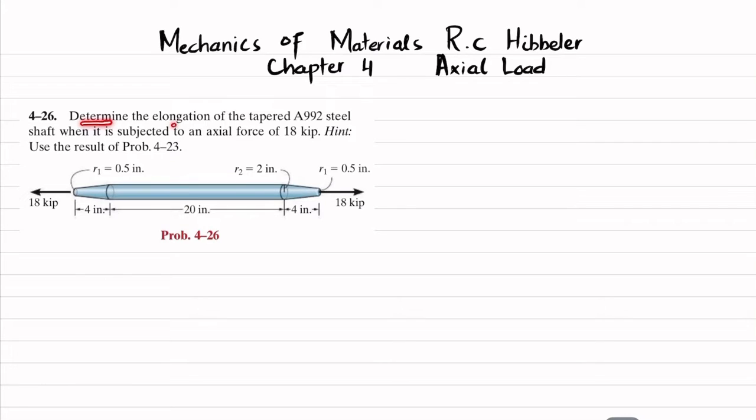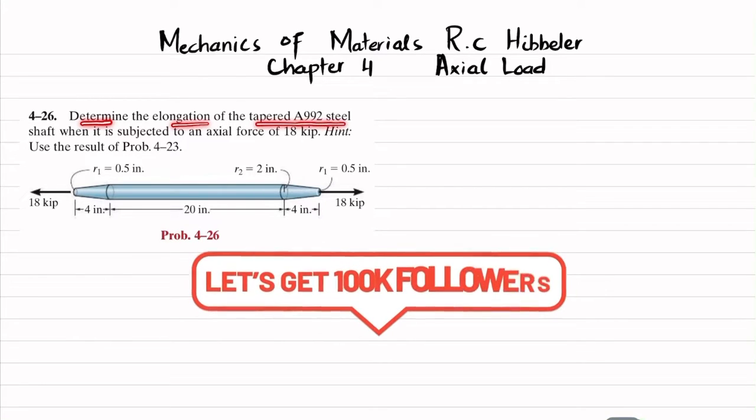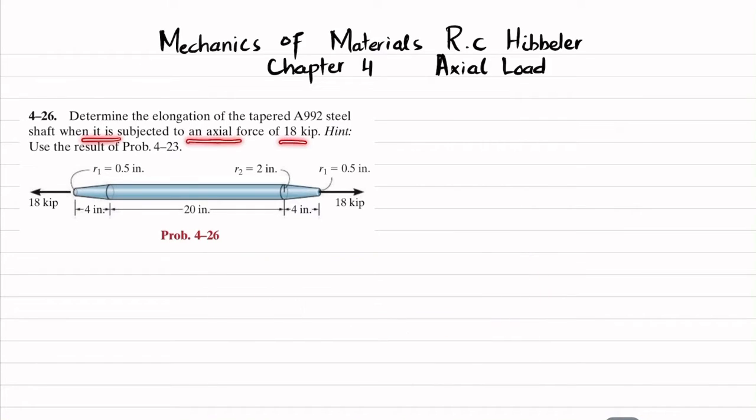The statement is: determine the elongation of tapered A-992 steel shaft when it is subjected to an axial force of 18 kips. Hint: use the result of problem 4-23.